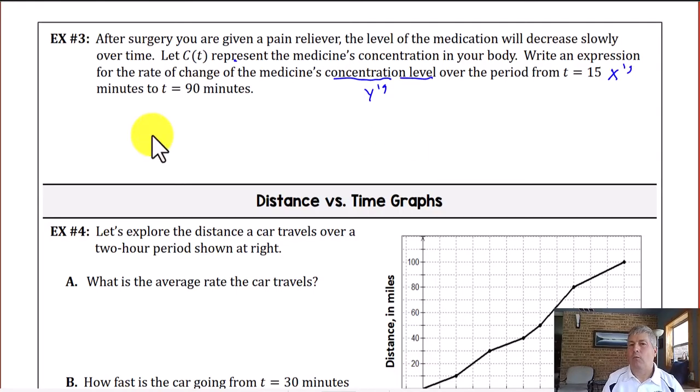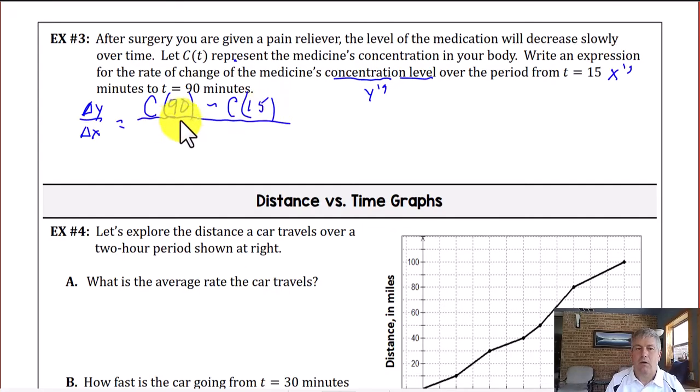Well, we don't have a formula. We don't have any data. All we have is our x's. So really, the only way we can represent this is in its generic form. So our y's over our x's, our change in y over our change in x. Well, our change in y is really whatever the concentration is at 90 minutes minus the concentration at 15. So if we put 90 and 15 into our function, that's all that is. Those are our y values. And then our x's are going to be 90 minus 15. And 90 minus 15 is 75. So our final answer is just c of 90 minus c of 15, all over the 75 minute time period.